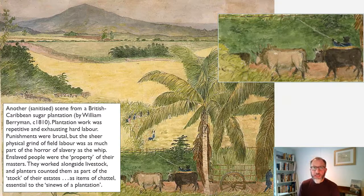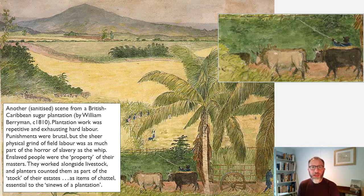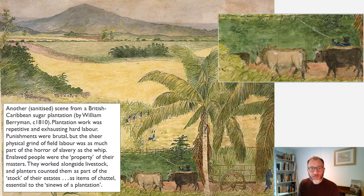Let's think about the ways in which work was organised on a plantation and about the enslaved people forced to work on these properties. Here is another sanitised scene from a British Caribbean sugar plantation from the early 19th century, illustrating work in the fields. Plantation work was repetitive and extremely exhausting, hard labour. We tend to associate slavery with brutal punishment and the whip, quite rightly, as a really important form of punishing and torturing enslaved people and keeping them to their work. But as much as anything, it's the sheer physical grind of field labour — essentially people being worked to death — that represents the true horror at the heart of slavery.